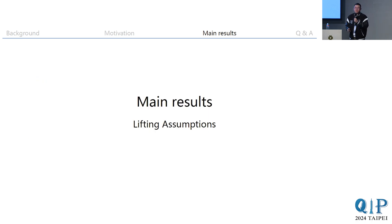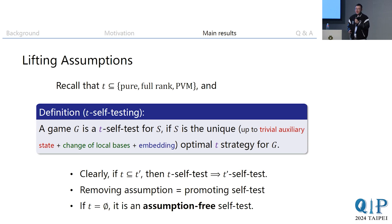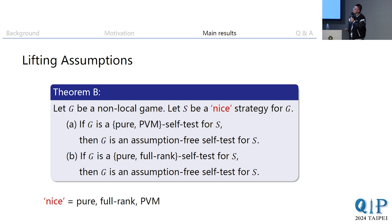Regarding lifting assumptions: recall T is the subset of all possible assumptions about the employed strategy, and we say a game is a T-self-test if those assumptions were made. The inclusion of subsets gives a hierarchy: if T is a subset of T', then a T-self-test makes fewer assumptions than a T'-self-test and is thus a stronger statement. Removing assumptions means promoting a self-testing statement from a weaker form to a stronger form. If T equals the empty set — no assumptions made — we call it an assumption-free self-test.